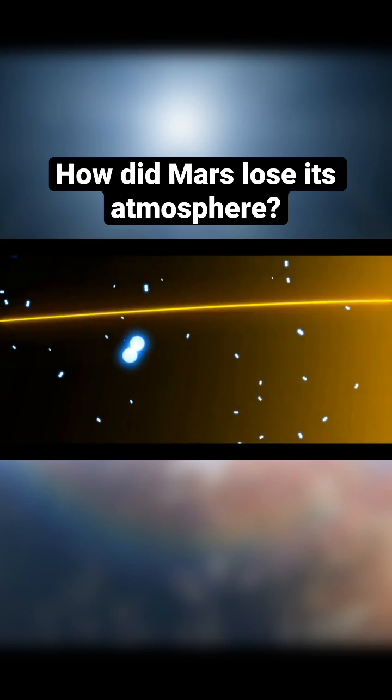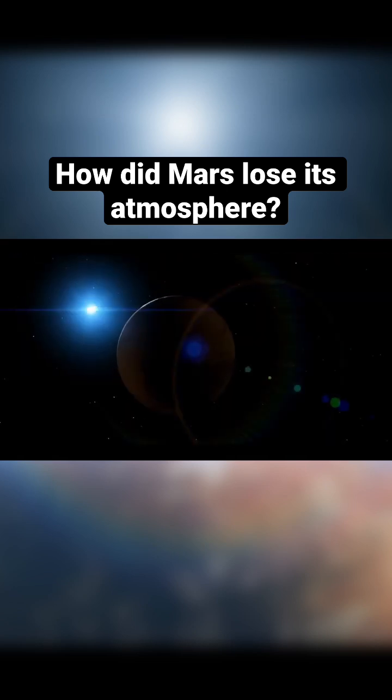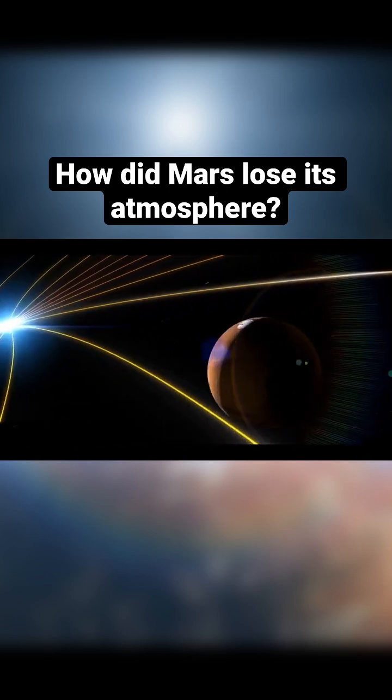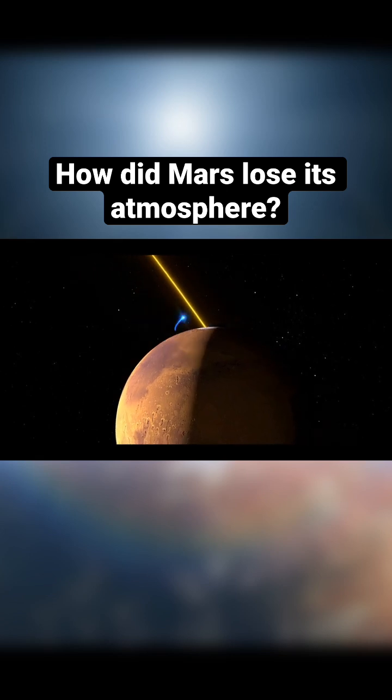Ions by themselves don't do much, but when a magnetic field is nearby, they'll spin around the field. Conveniently, the sun generates a giant magnetic field that is carried by the solar wind. As the magnetic field sweeps past the planet, some ions will get carried away.